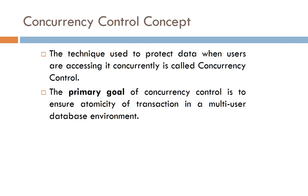Next is the concept of Concurrency Control. The technique used to protect data when users are accessing it concurrently is called concurrency control. Whenever more than one user accesses the same data, we must protect that data. The primary goal of concurrency control is to ensure the atomicity of transactions in a multi-user database environment.